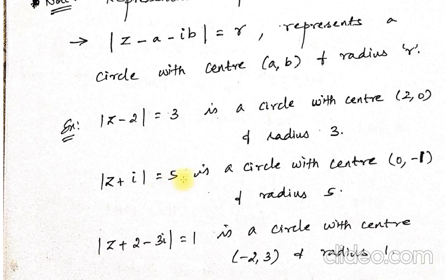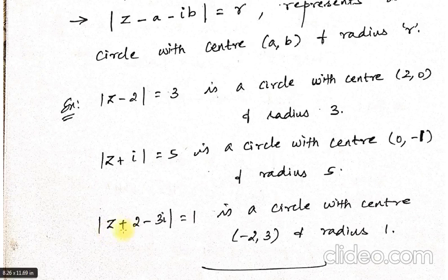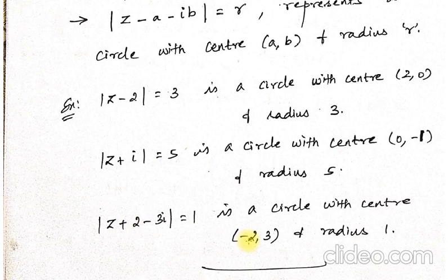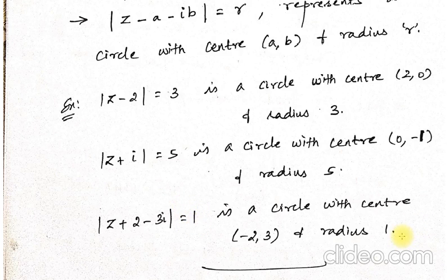The radius is the right-hand side value, which is 5. Now look at this example: |Z + 2 minus 3i| = 1. It represents a circle. The centre is (minus 2, 3). The real part is 2, so its negative is minus 2. The imaginary part is minus 3, so its negative is plus 3. The radius is 1.